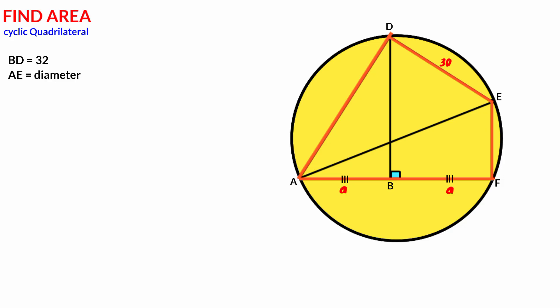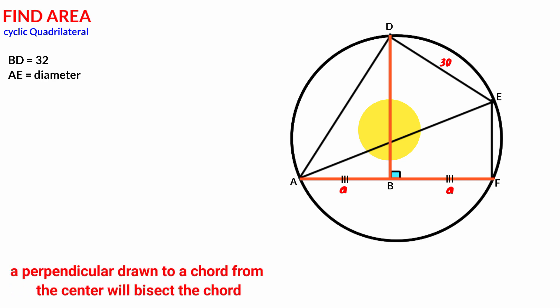It is very simple. We start from this chord AF — we see that line BD bisects it at a right angle. From circle theory, we know that if a perpendicular is dropped to a chord from the center, it bisects the chord. So we can be assured that line BD passes through the center of the circle. Also, line AE is a diameter, and a diameter will surely pass through the center. There is only one center, so the point where the two lines meet is the center — call it O.